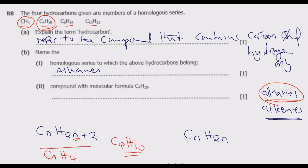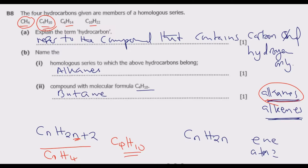For question B2, the compound with molecular formula C4H10 — since C is 4, that determines the name. When C is 4, we know the prefix is 'but'. Now, whether it is butene or butane depends on whether it belongs to alkanes or alkenes. Because it is an alkane, it becomes butane. If it were an alkene it would be butene.